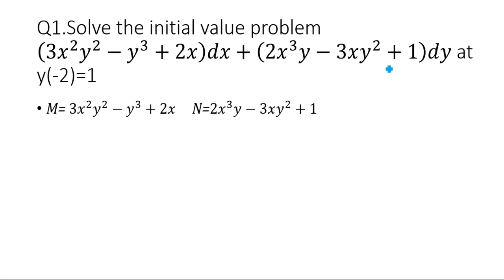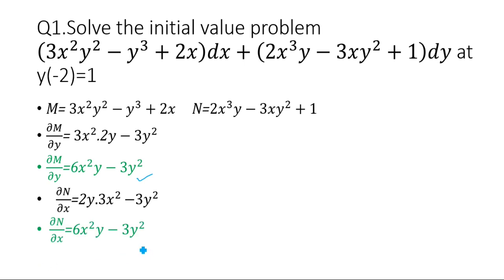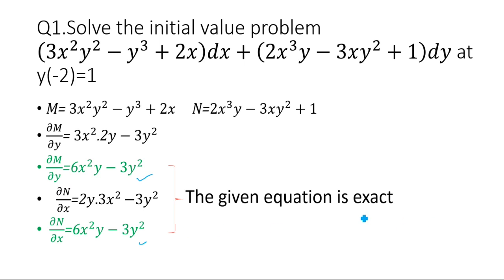The next step is to check for exactness. We calculate ∂M/∂y = 3x²·2y − 3y² = 6x²y − 3y². Then we calculate ∂N/∂x = 2y·3x² = 6x²y. Since ∂M/∂y equals ∂N/∂x, the given equation is exact, and we can now solve it using the grouping method.